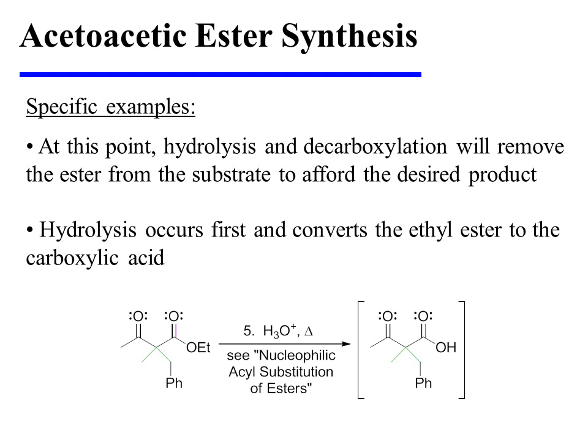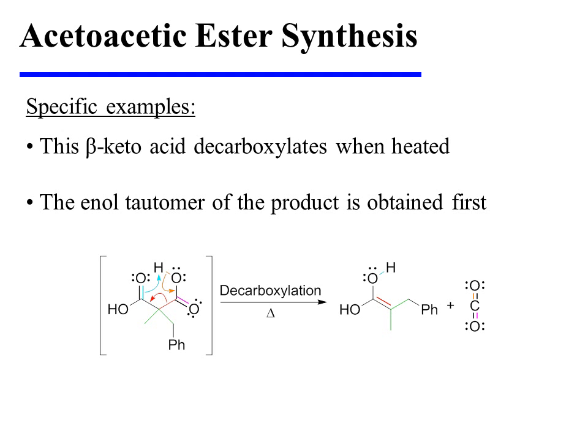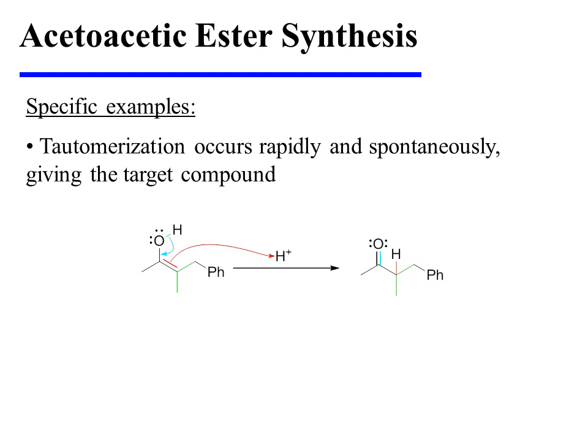At this point, hydrolysis and decarboxylation will remove the ester from the substrate to afford the desired product. Hydrolysis occurs first and converts the ethyl ester to the carboxylic acid. This beta-keto acid decarboxylates when heated, and the enol tautomer of the product is obtained first. Tautomerization then occurs rapidly and spontaneously, giving the target compound.